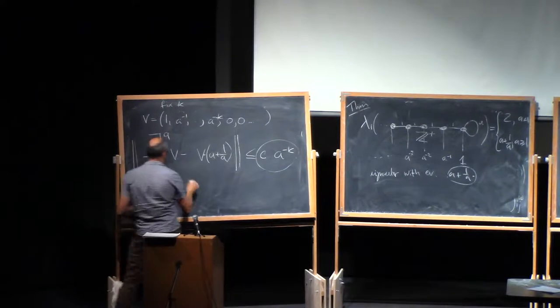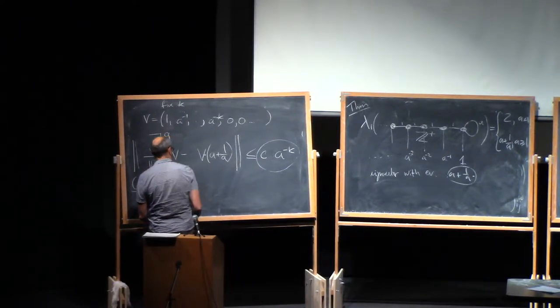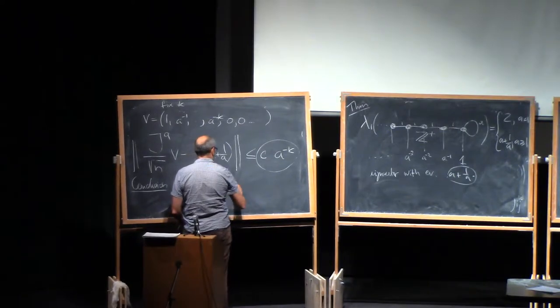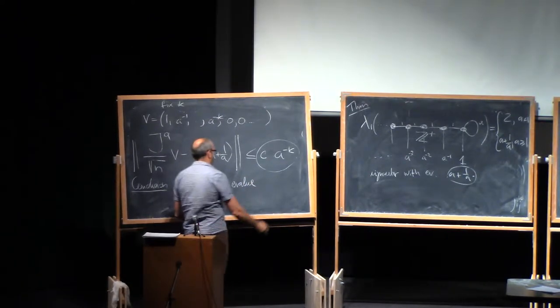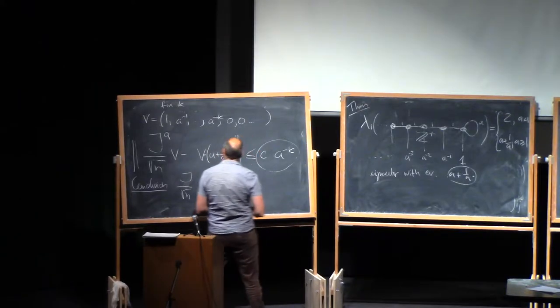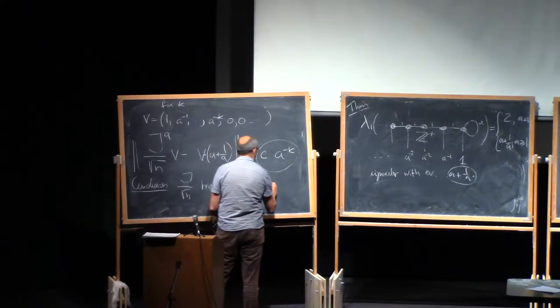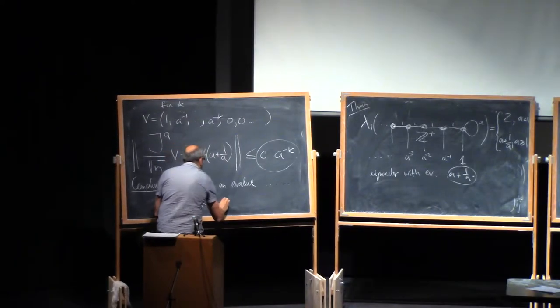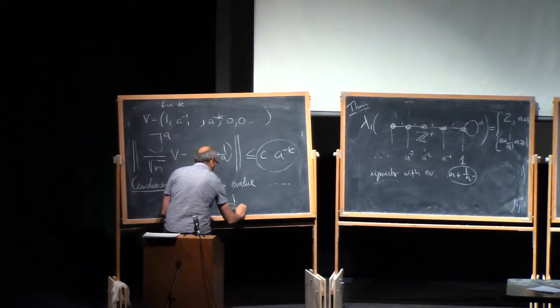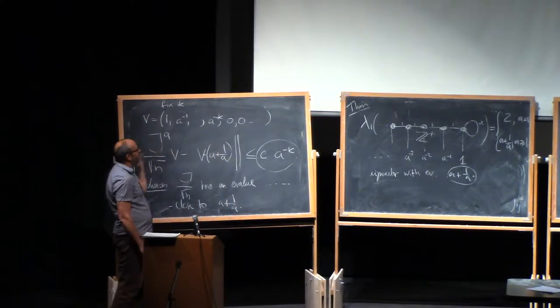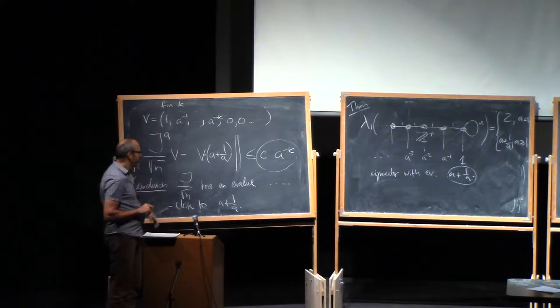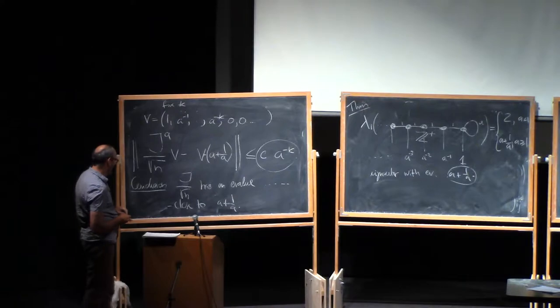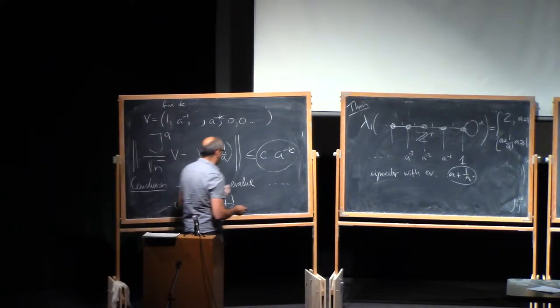But the conclusion... I'll just write it down. So J over root N has an eigenvalue. Well, I leave here some dot, dot, dot close to A plus 1 over A. If you satisfy the approximate eigenvalue equation, then there is an eigenvalue nearby. How close is it? Well, you know...